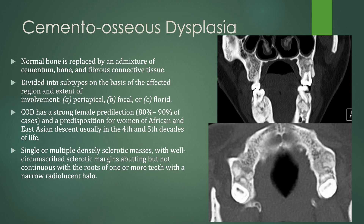Cementoosseous dysplasia: the normal bone is replaced by a mixture of cementum, bone, and fibrous connective tissue. These are divided into subtypes and can be periapical, focal, or florid. There is a strong female predilection and a predisposition for women of African and East Asian descent, tending to present in the fourth and fifth decades of life. They can be single or multiple densely sclerotic masses with well-circumscribed sclerotic margins, abutting but not continuous with the roots of one or more teeth. Look for that radiolucent halo around central sclerosis.